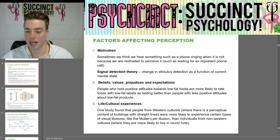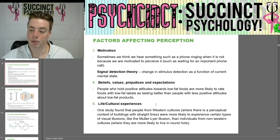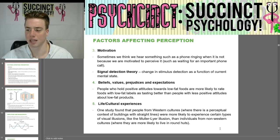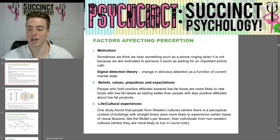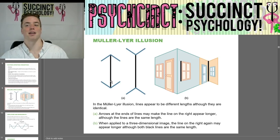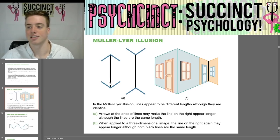We also have life and cultural experiences. One study found that people from Western cultures, where there is a perceptual context of buildings with straight lines, were more likely to experience certain types of visual illusions, like the Müller-Lyer illusion, than individuals from non-Western cultures where they are more likely to live in round huts.